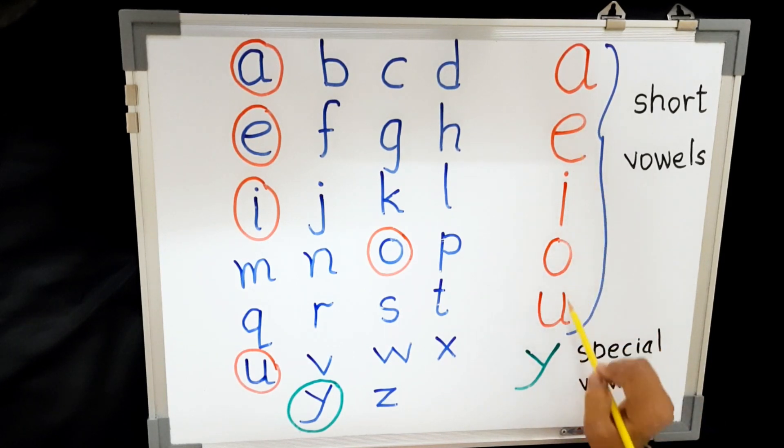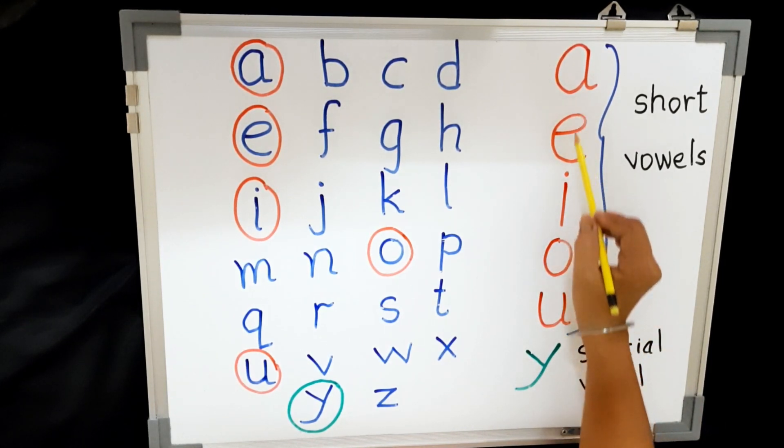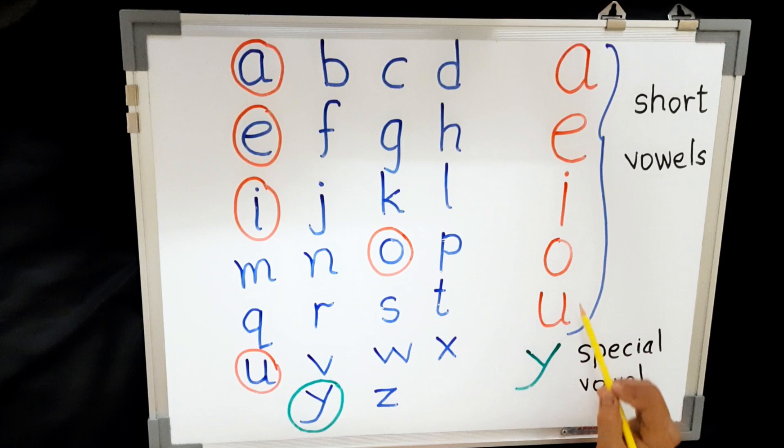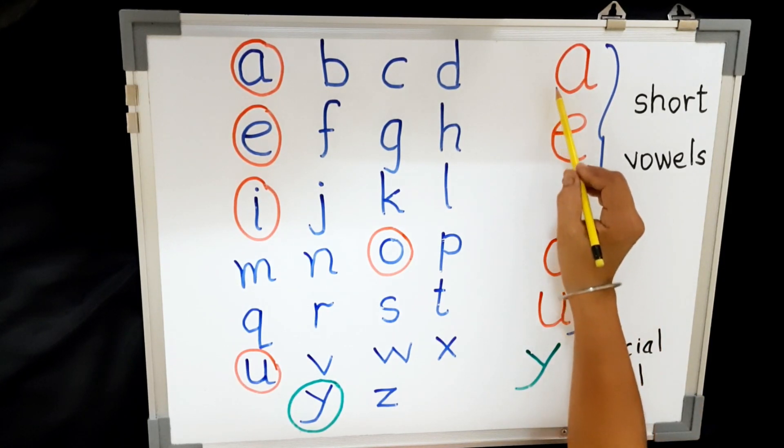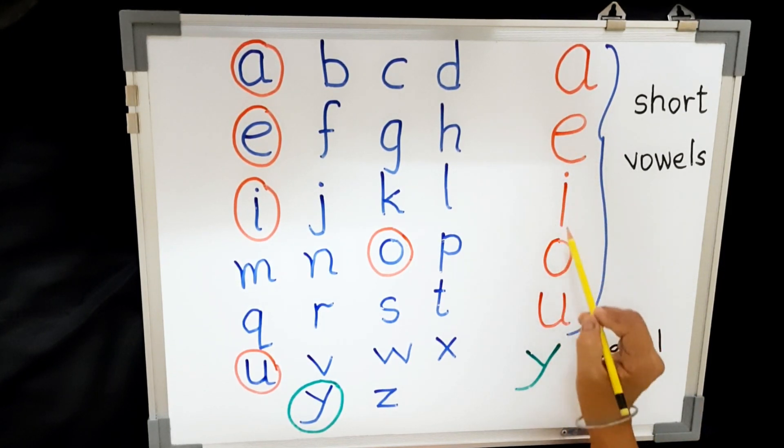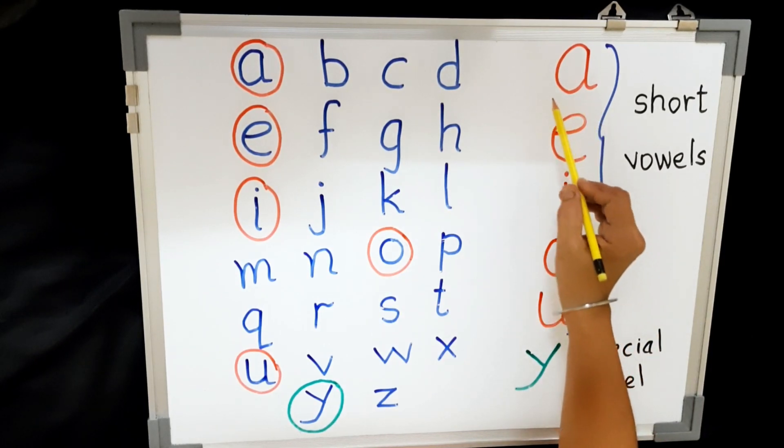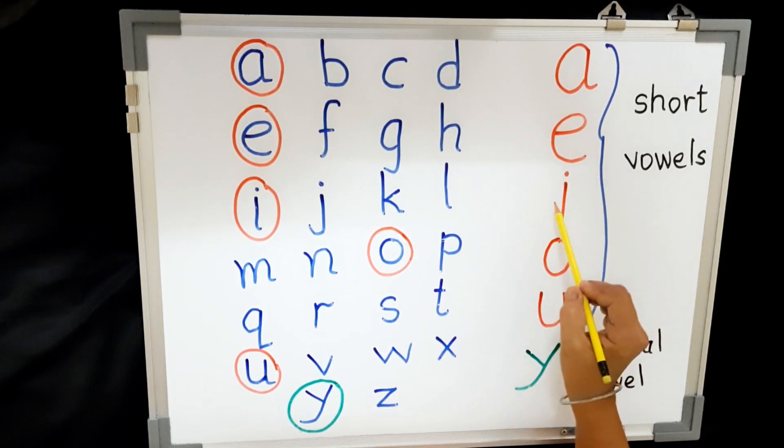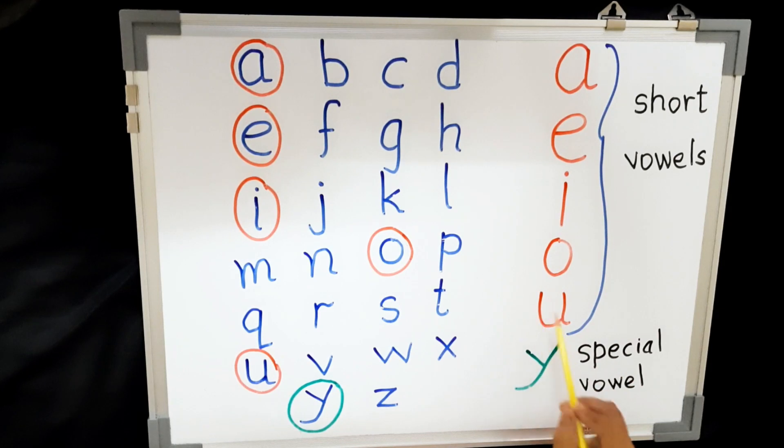So, here are the short vowels. You repeat after me. A, E, I, O, U. A, A, I, O, U. Repeat after me. A, A, I, O, U. These are short vowels.